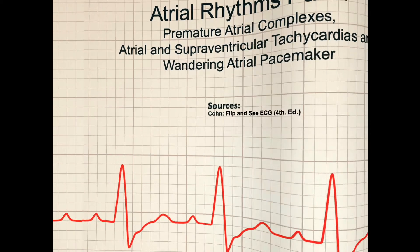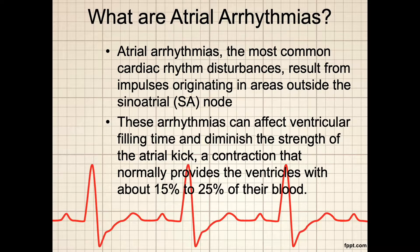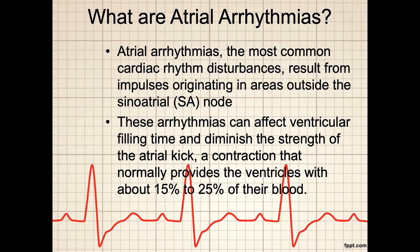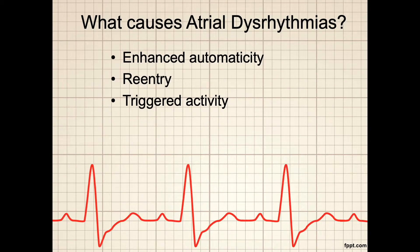Atrial arrhythmias are the most common cardiac rhythm disturbances and result from impulses originating in areas outside of the sinoatrial node but within the atria. These arrhythmias can affect ventricular filling time and diminish the strength of atrial kick, a contraction that normally provides the ventricles with about 15-25% of their total blood volume. Causes of atrial dysrhythmias include enhanced automaticity, re-entry, and triggered activity. With enhanced automaticity, atrial fibers can trigger abnormal impulses.